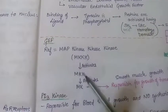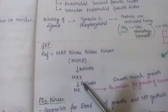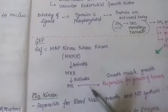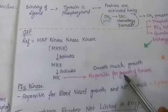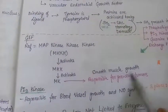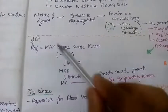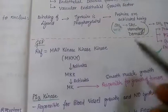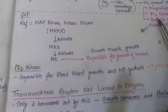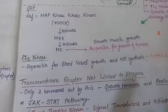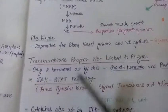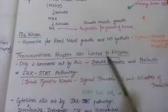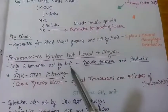MKKK activates MKK after phosphorylation, and MKK activates MK (MAP kinase) after phosphorylation. MK activates certain factors responsible for tumor growth, especially smooth muscle growth. This is one reason for tumor development, and drugs are being developed to inhibit MK. PI3-kinase is responsible for blood vessel growth and eNOS synthesis.